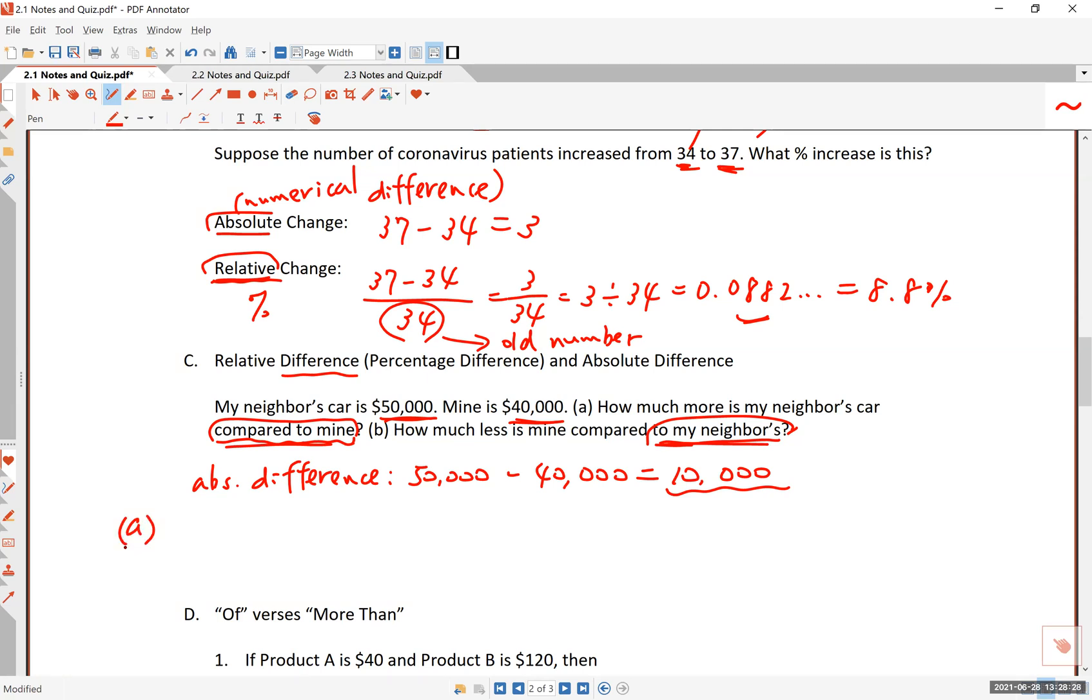Now for A, how much more is my neighbor's car compared to mine, right? So compared to my car, this phrase tells me that my car price is the reference number. So for this relative percentage calculation, or the relative difference calculation, you divide the absolute difference, $10,000 by the price of my car, which is $40,000. And that turns out to be 0.25. So what this is saying is that my neighbor's car, by the way, this is 25%. So his car costs 25% more than mine.